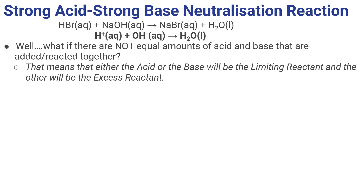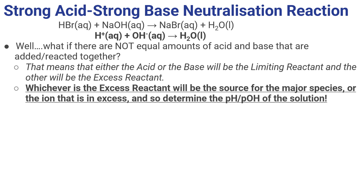What if we don't have a perfect reaction? What if we don't have a perfect amount of acid reacting with a perfect amount of base? That means we're going to have an excess reactant. The net ionic equation is still the same, but if I don't have the same number of moles — same volume/same molarity, or different volumes/molarities giving us the same moles — I'm going to have either H+ left over or OH- left over. To determine the pH, I've got to figure out what's in excess, then it just becomes a strong acid or strong base problem.